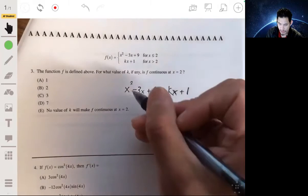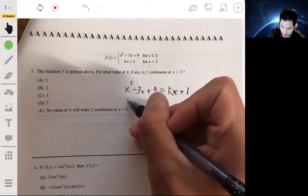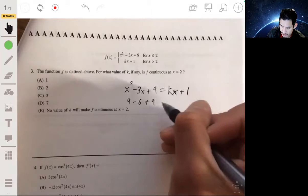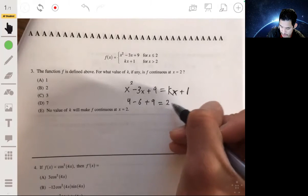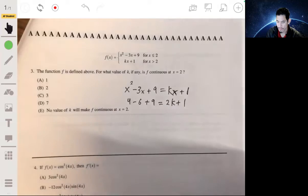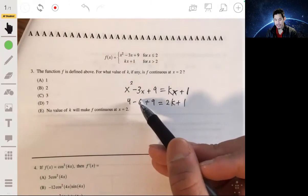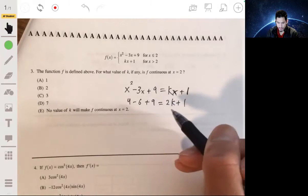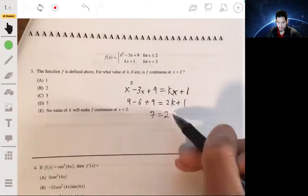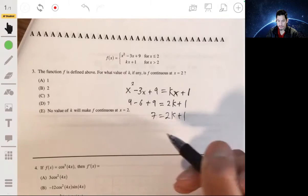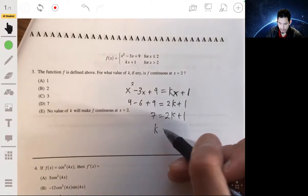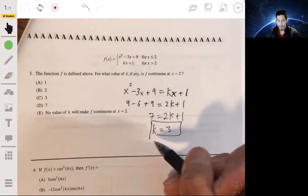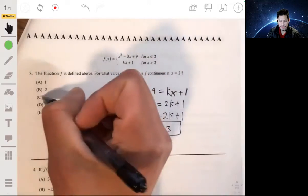So we get 2 squared, 4 minus 3 times 2 minus 6 plus 9 equals 2k plus 1. 4 minus 6, negative 2 plus 9, 7 equals 2k plus 1. Take away 1, divide by 2, and we would get k is 3. So our answer would be c.